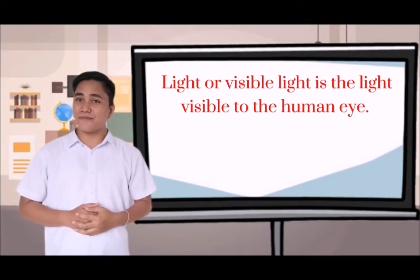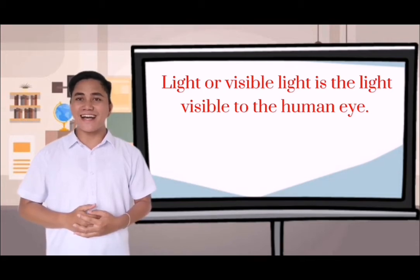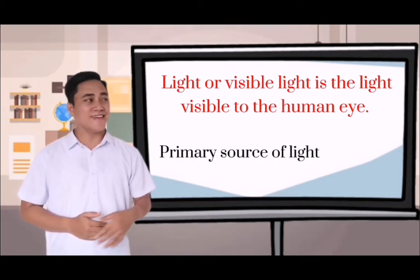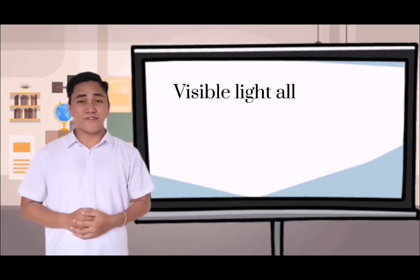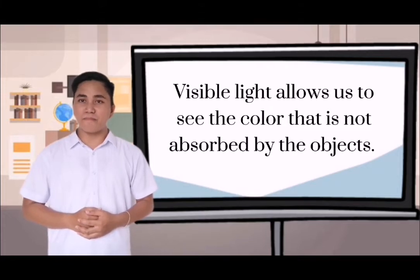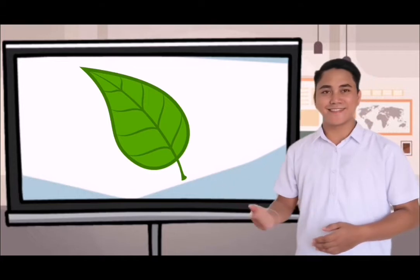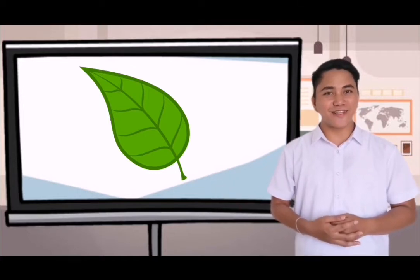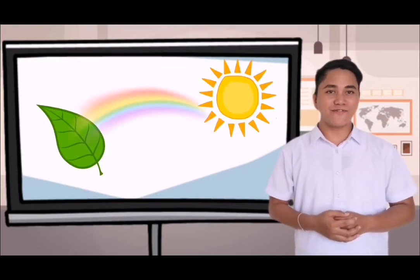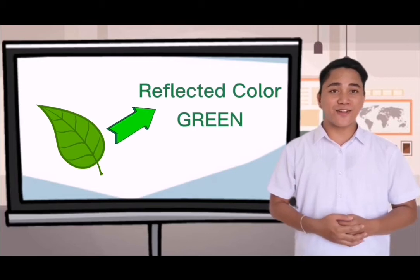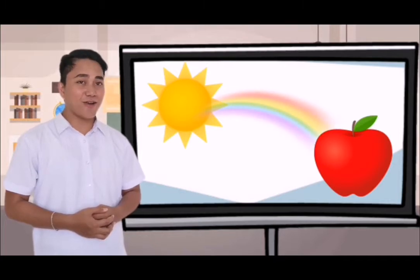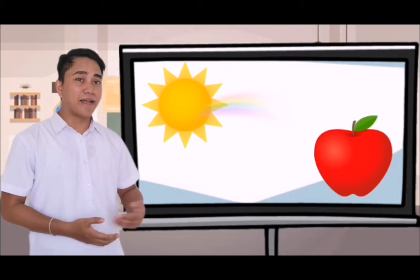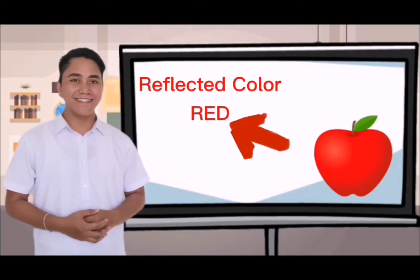Light or visible light can be seen through our eyes, and its primary source is the sun. Because of visible light, we are able to see colors that are not absorbed by objects. For example, we see a leaf as green because all colors from the visible light are absorbed by the leaf except green. Similarly, we see an apple as red because all colors are absorbed except red.